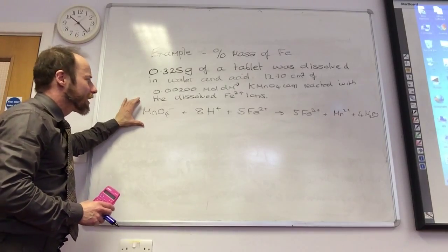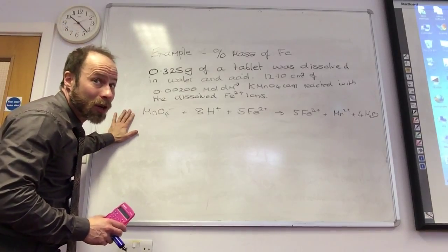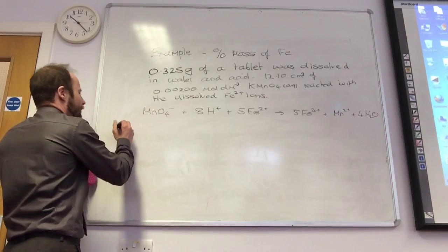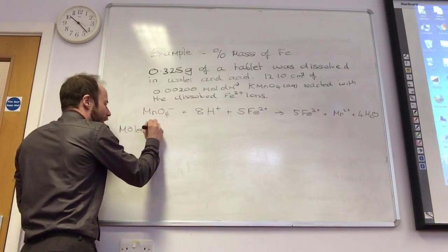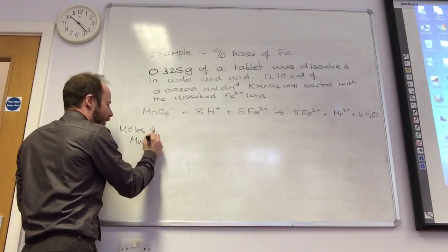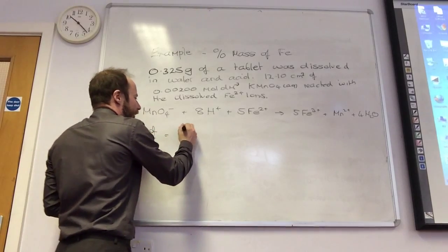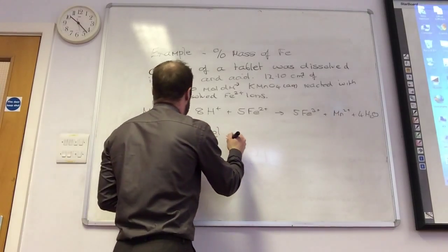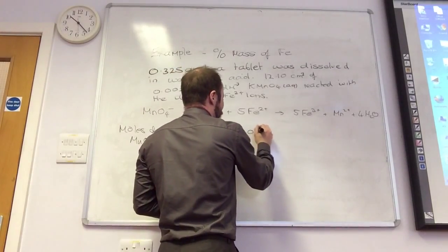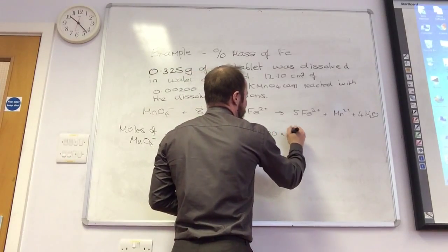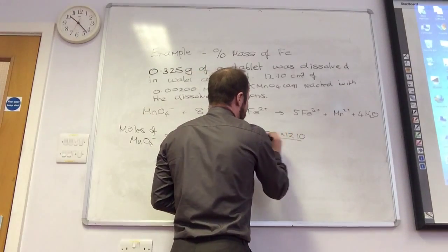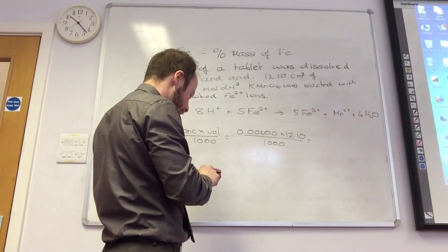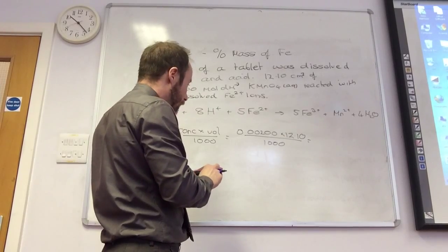So first thing we're going to do, this is the equation which you need to know. What's the first thing I would do? Moles of MnO4 minus, right. So let's do moles of MnO4 minus is going to equal concentration times volume over 1000. So that's 0.00200 times my 12.10, all over 1000.